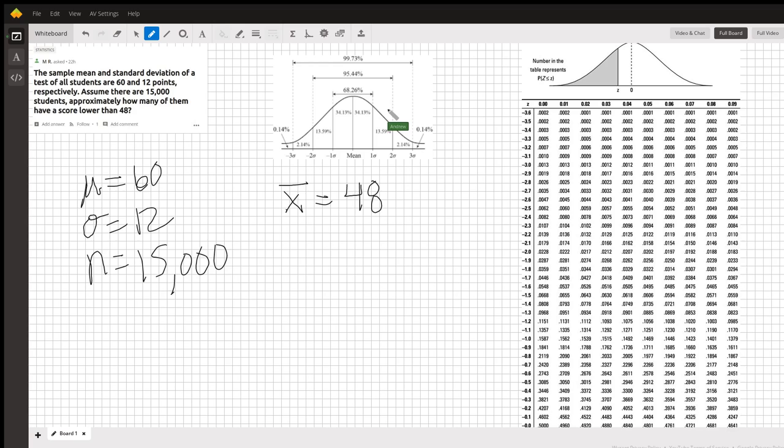What we're trying to find is the number of students who have a score lower than 48, which is going to be the probability of a student having a score lower than 48 times the number of students. This will give us our answer.